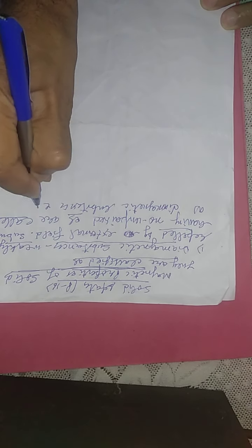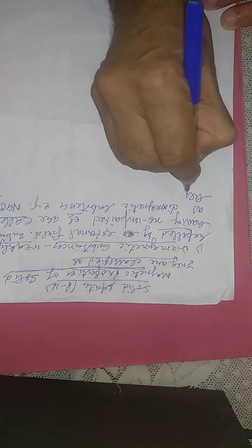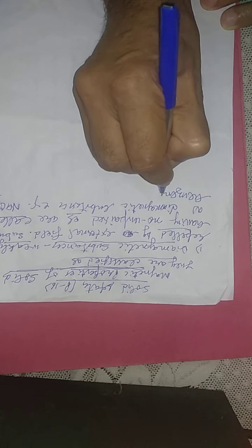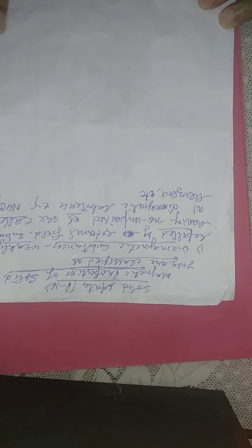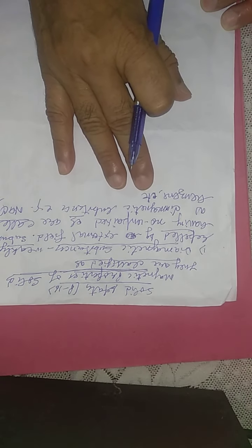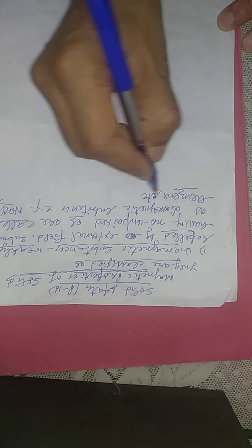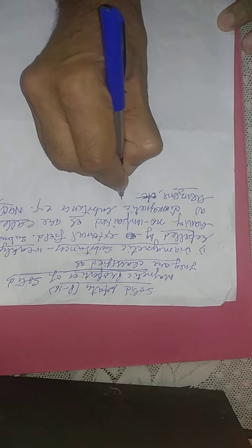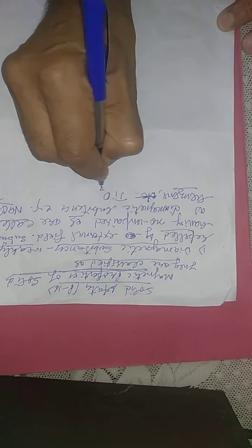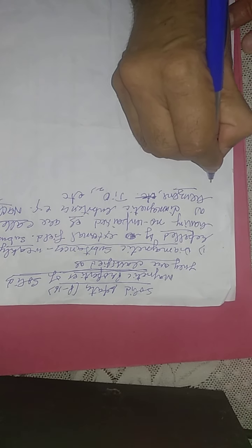Examples of diamagnetic substances: NaCl (salt), benzene, and titanium dioxide (TiO₂). Any substance which has no unpaired electrons is diamagnetic. Just remember the examples.